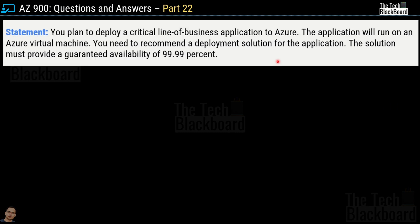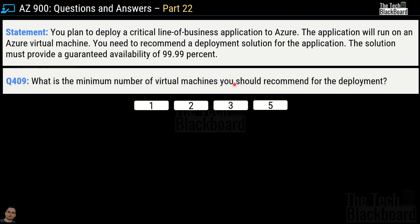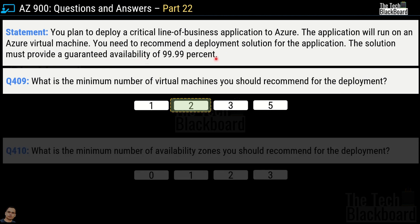Now, based on a scenario: you plan to deploy a critical line-of-business application to Azure running on an Azure virtual machine, requiring guaranteed availability of 99.99%. Question number 409: what is the minimum number of virtual machines you should recommend — 1, 2, 3, or 5? The correct answer is 2. Bare minimum, you should have two virtual machines to provide a guaranteed availability of 99.99%.